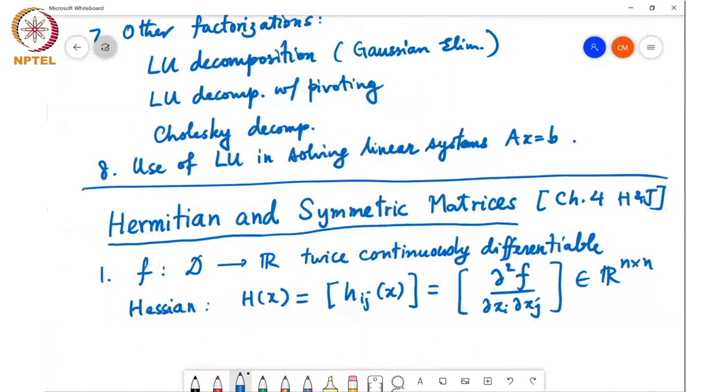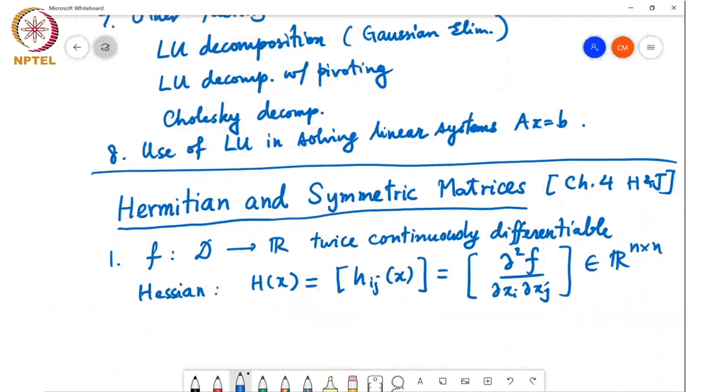A key property that is very important in optimization, differential equations, and so on is that ∂²f/∂x_i∂x_j equals ∂²f/∂x_j∂x_i. This is a fundamental property of these partial derivatives for every i,j equals 1, 2 up to n.